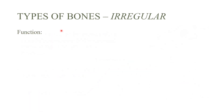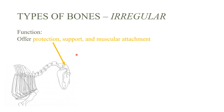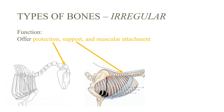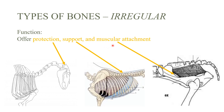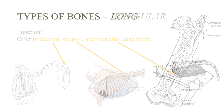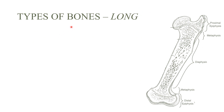The functions of irregular bones are protection — again the skull — support, which is provided by the vertebrae including the thoracic and lumbar ones, and muscular attachment, for example the pelvic bone with large muscles attached to it.